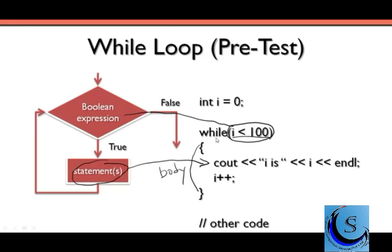Whenever we first come to this while condition — while i is less than 100 — i is going to be zero. I'm going to make a little table over here and keep track of the value of i, and also keep track of what we're outputting, because it looks like in the body of the while loop we're actually outputting something. So initially, i is going to be zero. Since i is zero, and zero is less than 100, we'd be able to get into the body of the while loop and execute these statements.